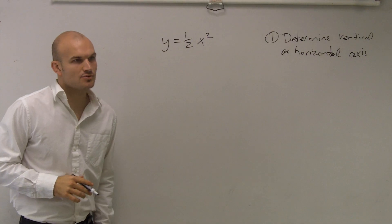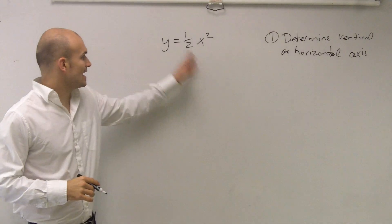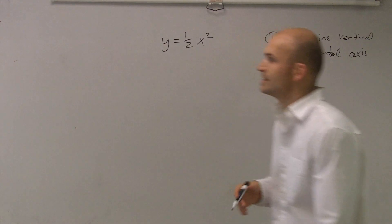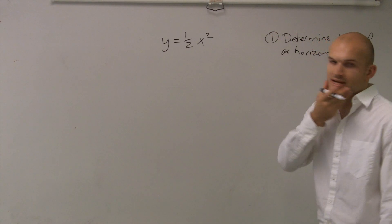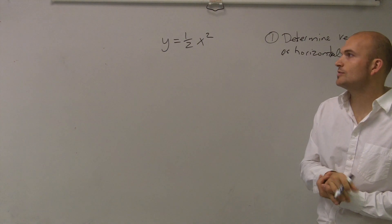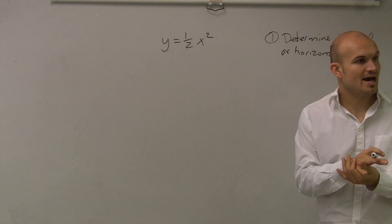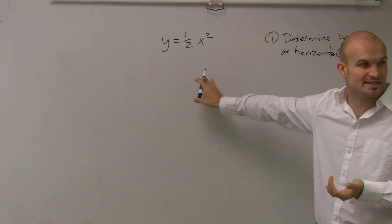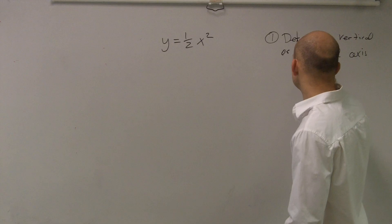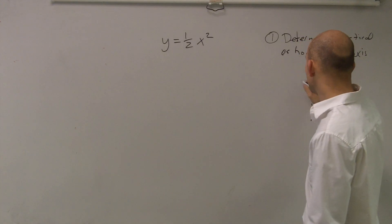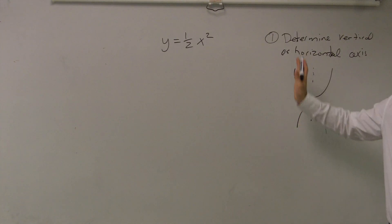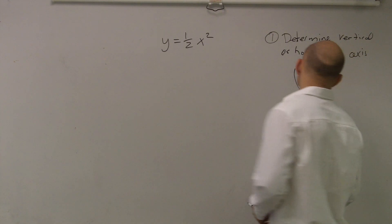So if I look at this, I notice I have an x squared and I have a linear y. So I'm going to look at my forms that we wrote down and say, which one of those has the x squared? I have x minus h squared equals 4p times y minus k. That means this problem is going to be dealing with a vertical axis — my axis of symmetry is going to be a vertical line, meaning my parabola is going to open up or open down. It's going to have a vertical axis of symmetry.